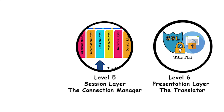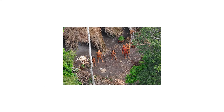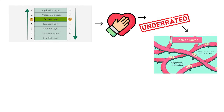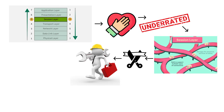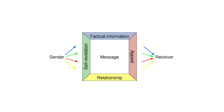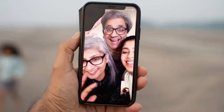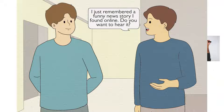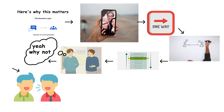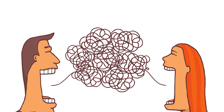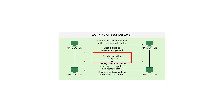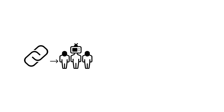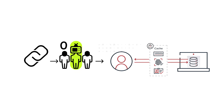Level 5: Session Layer — the connection manager. Now we're getting into territory most people never reach. The Session Layer, Layer 5 of the OSI model, is the most underappreciated layer. It manages dialogues between computers — establishing, maintaining, and terminating sessions between applications. When you're video chatting with someone, you're having a back-and-forth conversation. The Session Layer coordinates this: it establishes who talks when, manages turn-taking, and makes sure both sides stay synchronized. Without it, communication would be chaos. The Session Layer also creates checkpoints in data streams — if you're downloading a massive file and your connection drops halfway through, the Session Layer has saved your place so you can resume right where you left off.